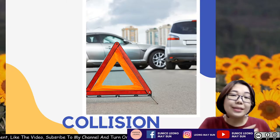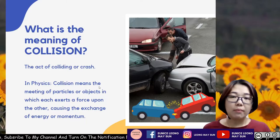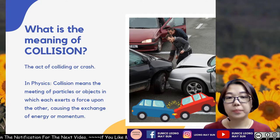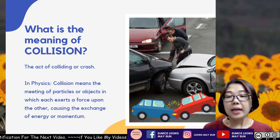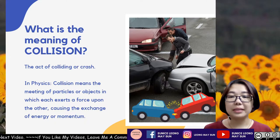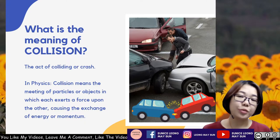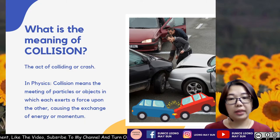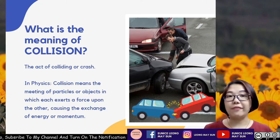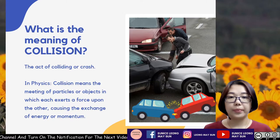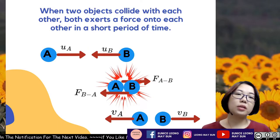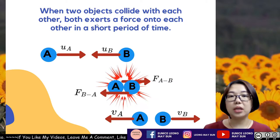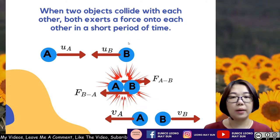Let's talk about collision. What does collision actually mean? The meaning of collision is the act of colliding or crashing. In terms of physics, collision means the meeting of particles or objects in which each exerts a force upon the other, causing the exchange of energy and momentum. So when two objects collide with each other, both exert a force onto each other in a short period of time.